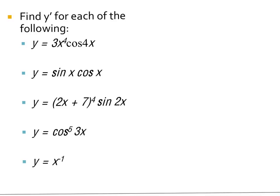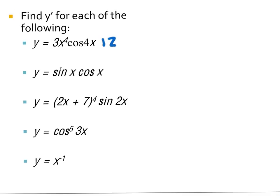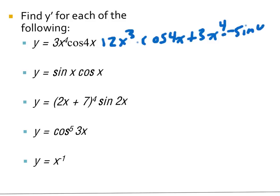Let's practice some of the rules that we've been playing around with. The first one is a product rule problem, because I can see there are two x's there. Remember u'v plus uv'. So the derivative of the first would be 12x cubed, and I leave the second one alone. Plus, I leave the first one alone — 3x to the fourth — times the derivative of the second. The derivative of cosine is negative sine 4x, times 4.